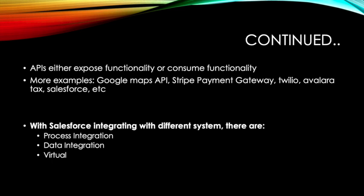Now let's talk about Salesforce specifically. You have process integration, data integration, and virtual integration. Process integration is process-oriented — for example, when somebody orders something, you need to send that order to a third-party system within a process. Data integration is more like syncing data from a different warehouse into Salesforce, or sending data from Salesforce to a different system in bulk on a regular basis. Virtual integration means you're not entering data into Salesforce — you're just showing it inside the Salesforce window, so it's virtually integrated but the data doesn't actually stay in Salesforce.